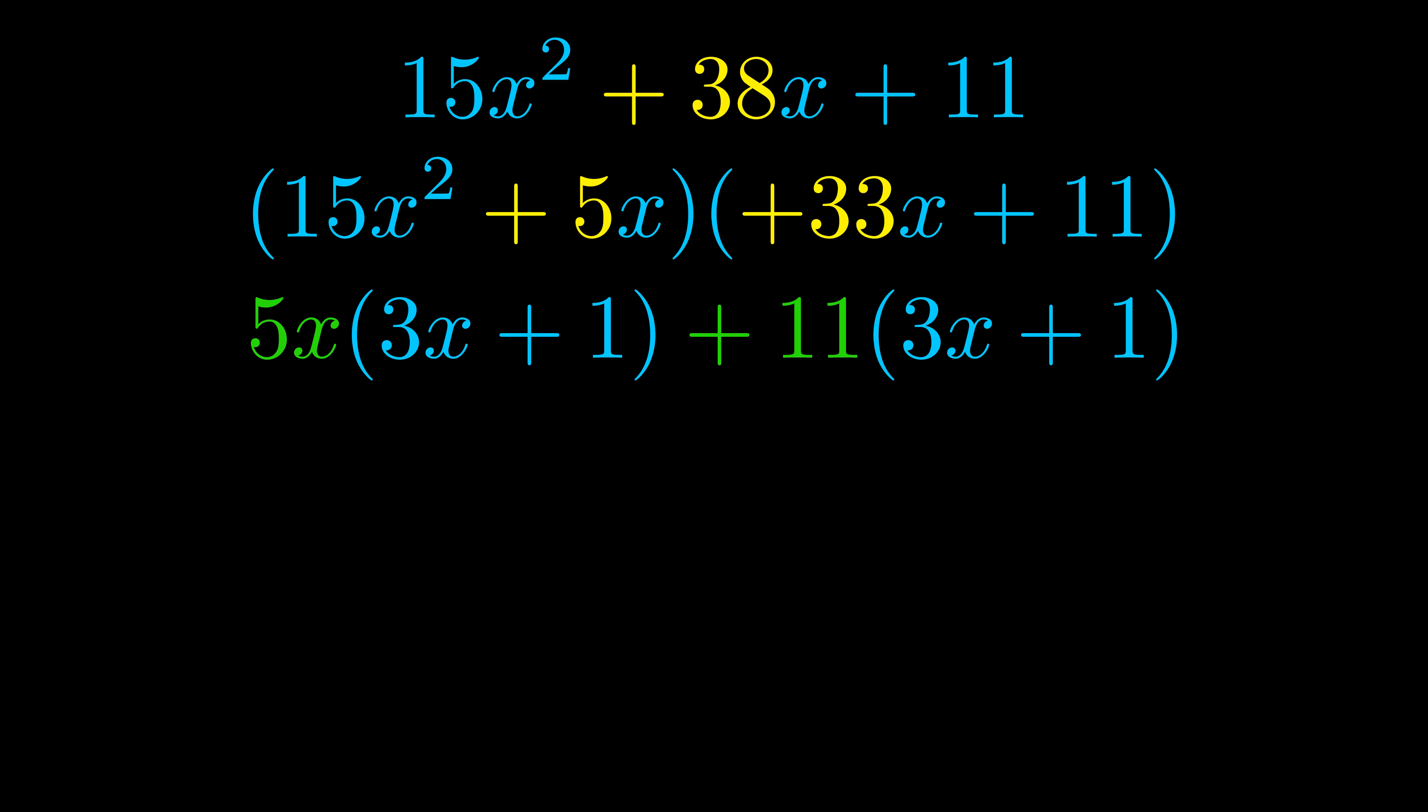Notice also how what remains inside of the parentheses is the same in both cases. The blue values are the same. Those blue values will become one of our factors and we will combine the two green values the GCFs that we pulled out to get the other one. And that is our fully factored equation.